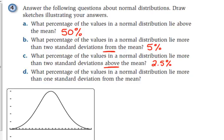Let's look at D. What percentage of the values in a normal distribution lie more than one standard deviation from the mean? So what percent lie within one standard deviation? 68. So what do we have left over? 32.